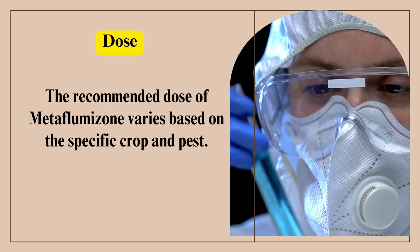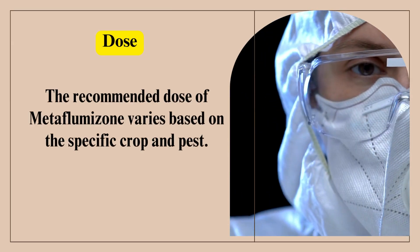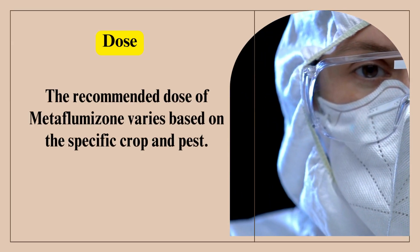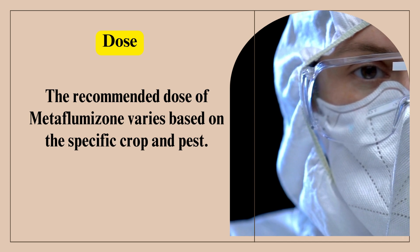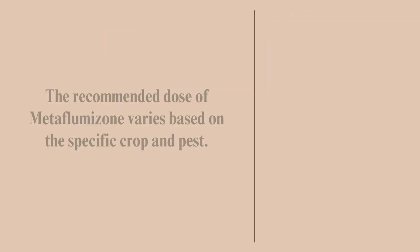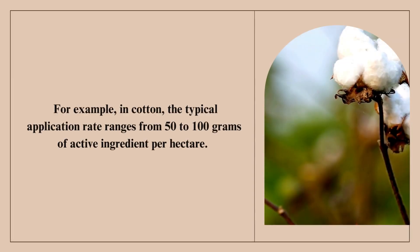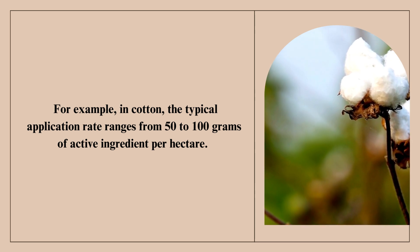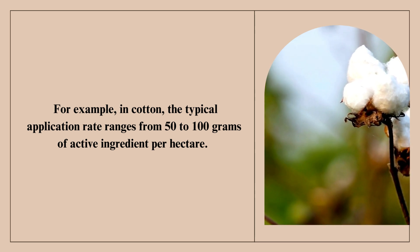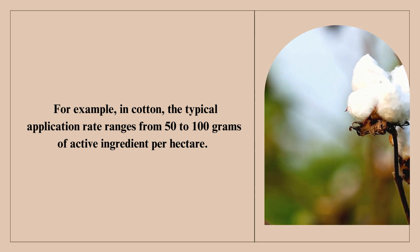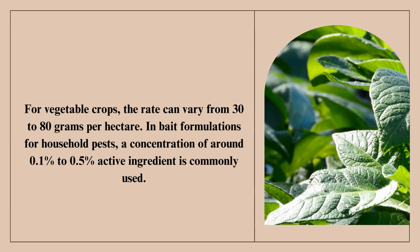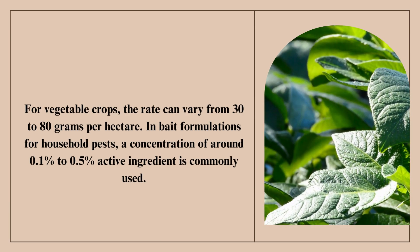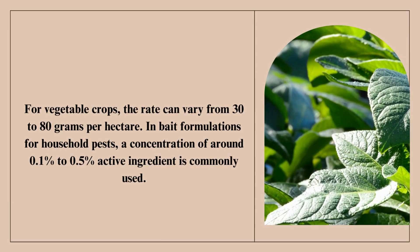Dose. The recommended dose of Metaflumazone varies based on the specific crop and pest. For example, in cotton, the typical application rate ranges from 50 to 100 grams of active ingredient per hectare. For vegetable crops, the rate can vary from 30 to 80 grams per hectare.